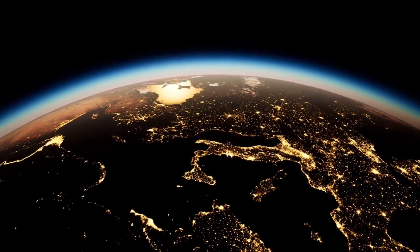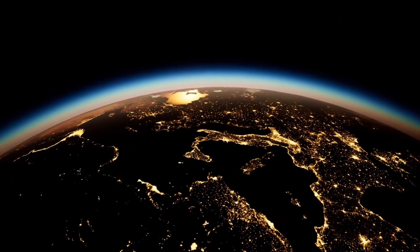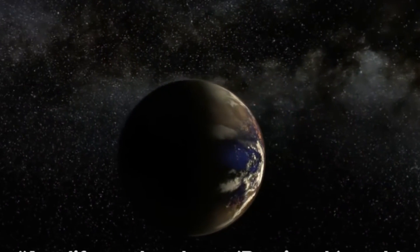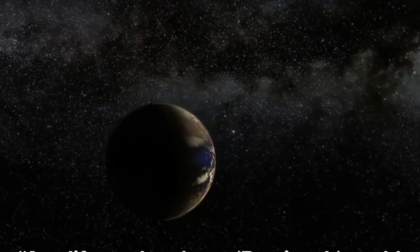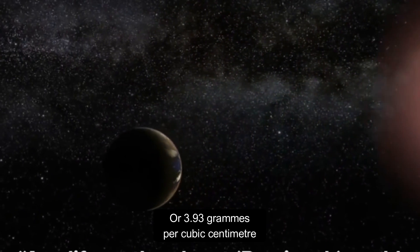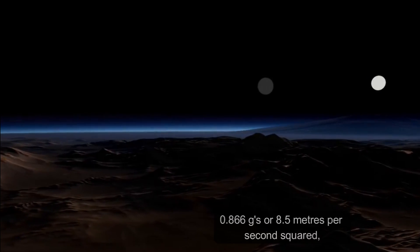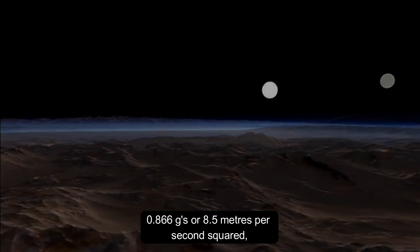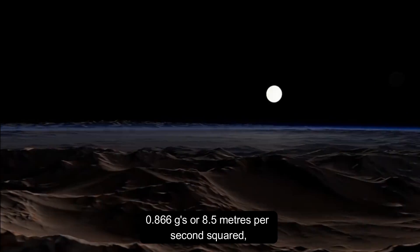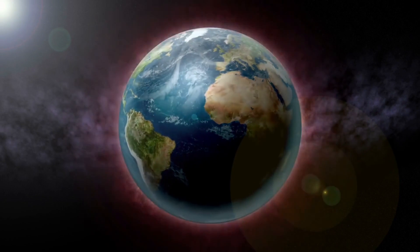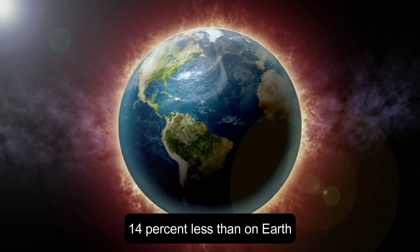However, there is another variable that can significantly alter this calculation. If Proxima b has the same mass density as Mars, or 3.93 grams per cubic centimeter, its surface gravity would then be 0.866 gs, or 8.5 meters per second squared, and you would weigh 14% less than on Earth.